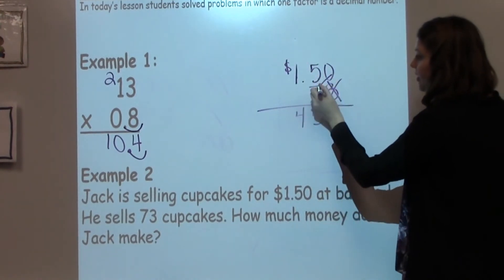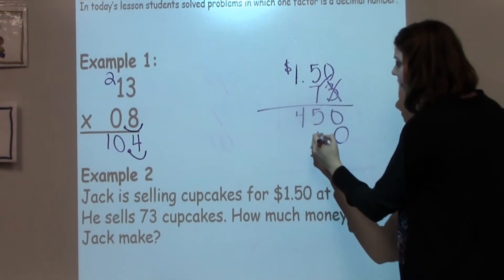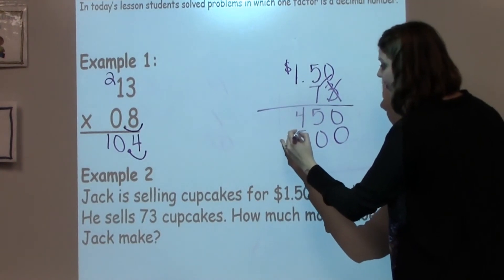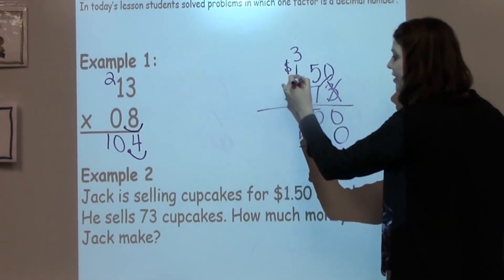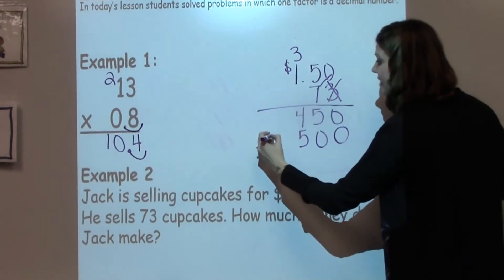Erase this. 0 times 7 is 0, 5 times 7 is 35, and I have 1 times 7, which is 7, plus 3 more is 10.